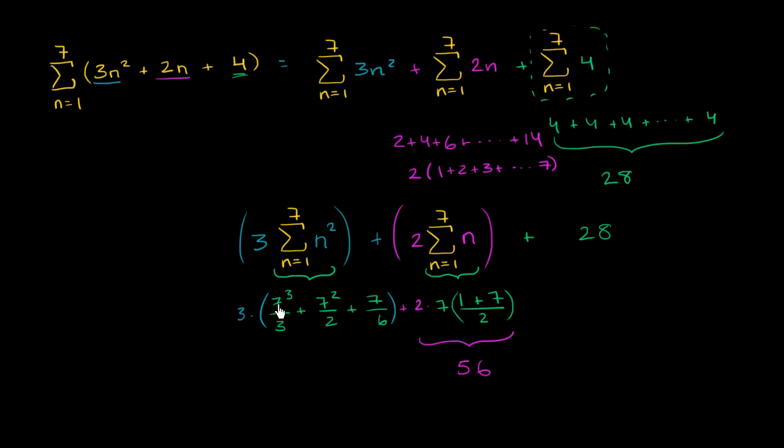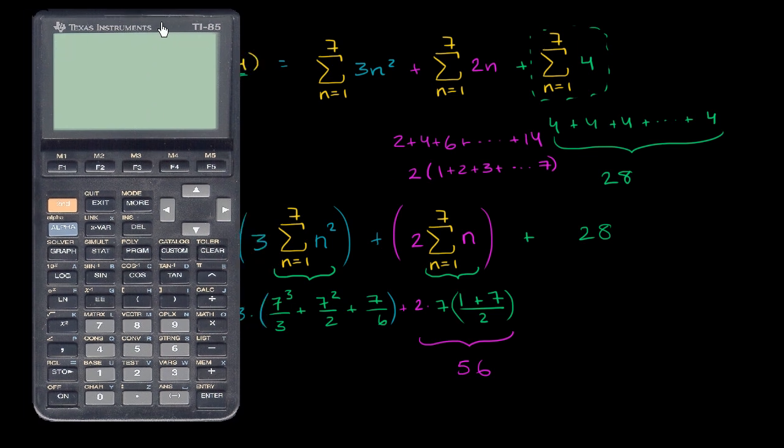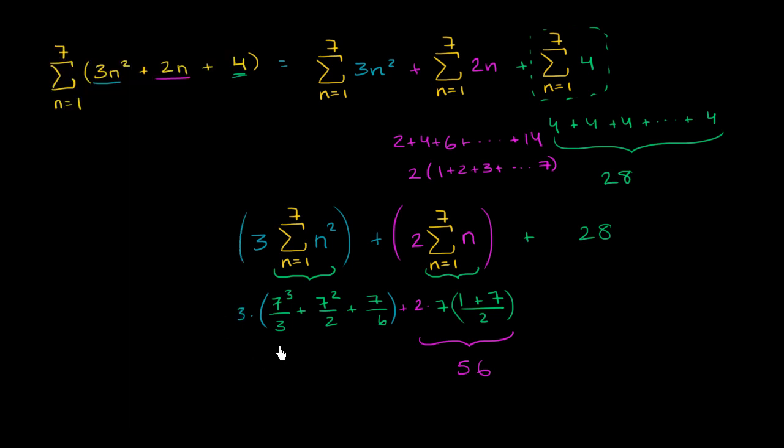Now this, let's see, we could evaluate this if we want. And I guess we could take out a calculator if we wanted to figure out 7 to the third power. So let's calculate. So we have 7 to the third power divided by 3 plus 7 squared divided by 2 plus 7 divided by 6. It gives us a drum roll of 140. So this is going to be equal to 3 times 140.